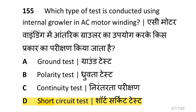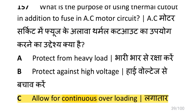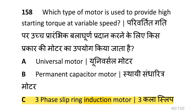The type of test conducted using an internal growler in AC motor winding is the short circuit test. The device used to test stator winding short or open faults is the internal growler. The purpose of using a thermal cutout in addition to a fuse in an AC motor circuit is to allow for continuous overloading protection.